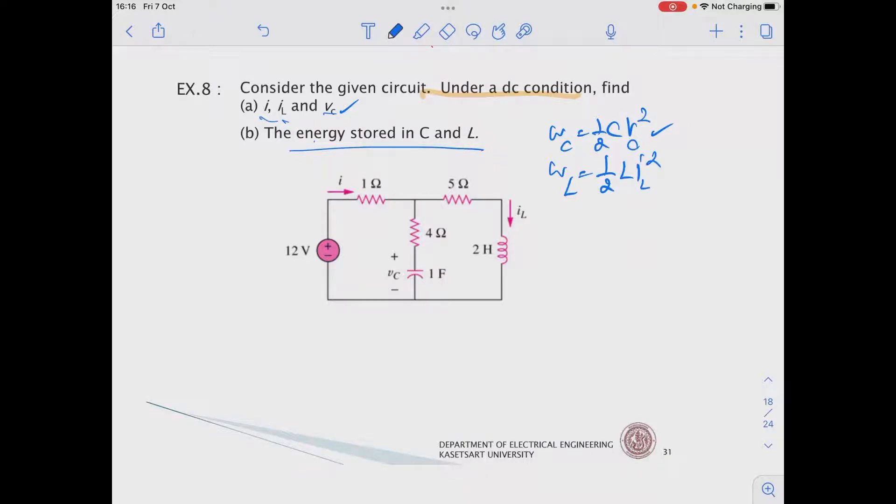Let's start by solving question number A. Based on the given circuit, this one is DC. Under DC condition, we know that C acts like an open circuit. So we will open circuit this branch out.